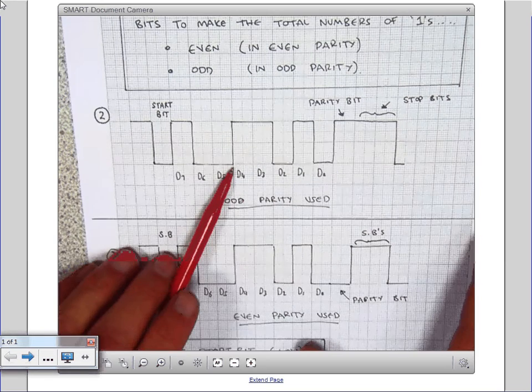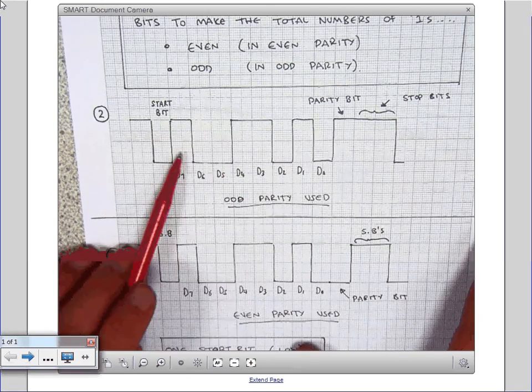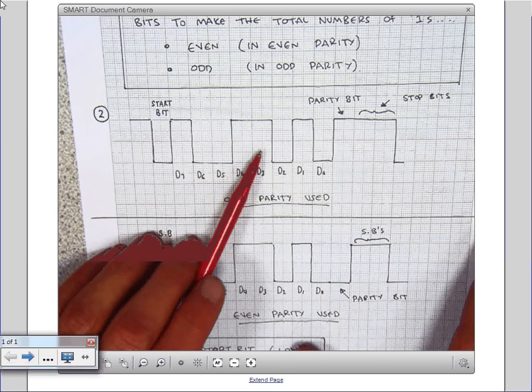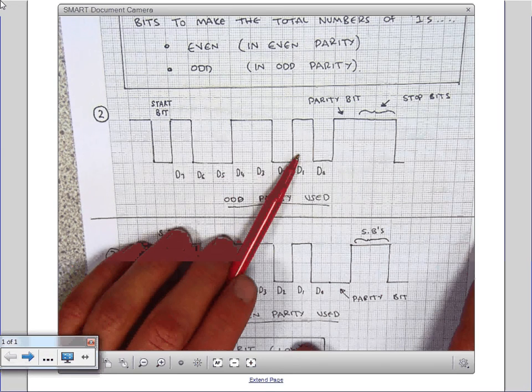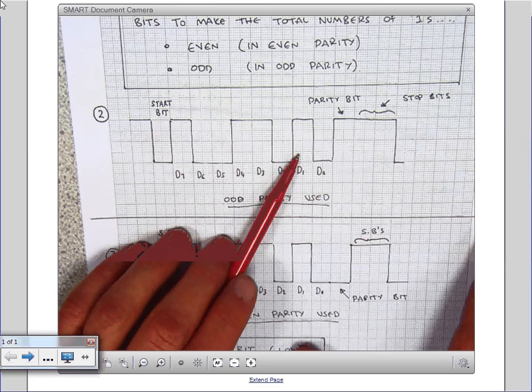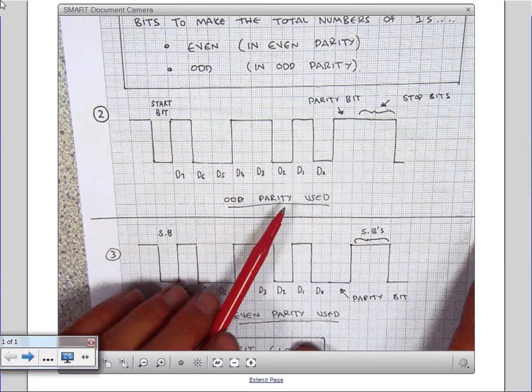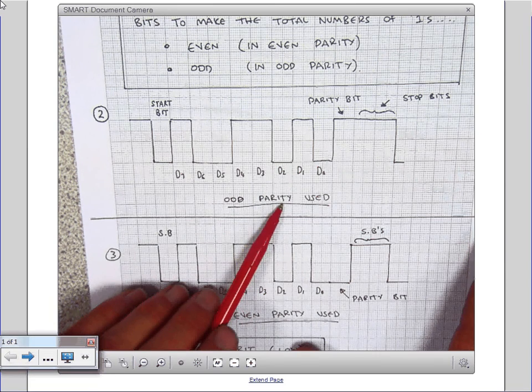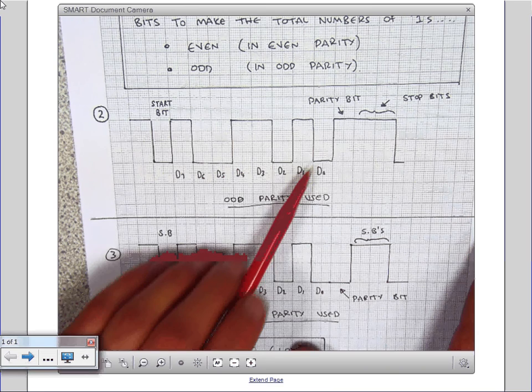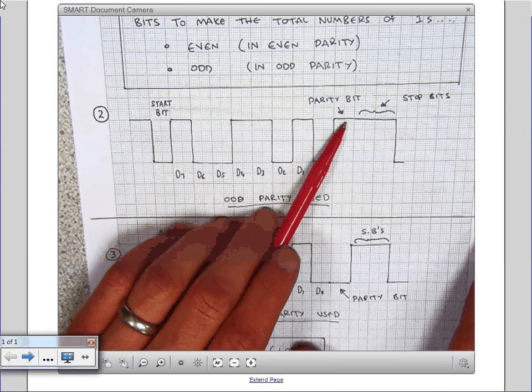So in this case, you can see odd parity has been used because we've got one, two, three, four bits which are one. If we want to use odd parity, we need an odd number of ones. So we make the parity bit high and that will give us five ones. So that's odd parity.